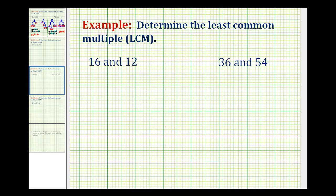In these examples, we want to determine the least common multiple, or LCM, which means we want to determine the smallest number that is a multiple of both 16 and 20, and the smallest number that is a multiple of both 36 and 54.